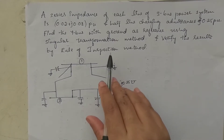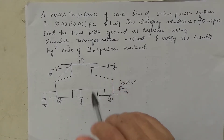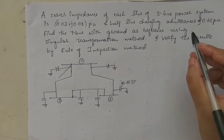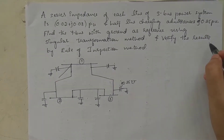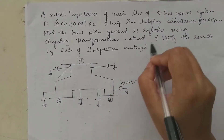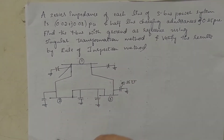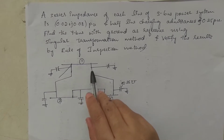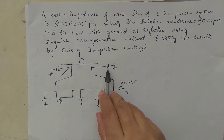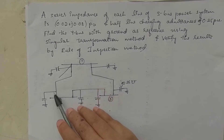We will use both the singular transformation method and verify the results by the rule of inspection method. The rule of inspection method is commonly used in the Gauss-Seidel method, Newton-Raphson method, decoupled method, and fast decoupled method. In this given network, one extra thing to observe is the half-line charging admittance connected on both sides of the nodes.